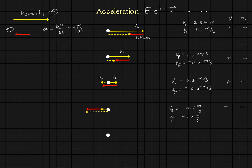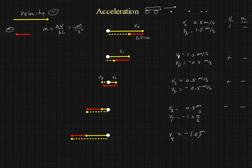One more. We're going to have an initial velocity of minus 1.5 meters per second. We add to that, head to tail, minus 1 meter per second squared, and that's going to give us a final velocity which is to the left — minus 2.5 meters per second. So v4 is equal to minus 1.5 meters per second, and v-final is equal to minus 2.5 meters per second. Negative velocity to start with, negative acceleration.